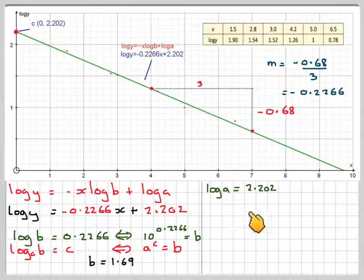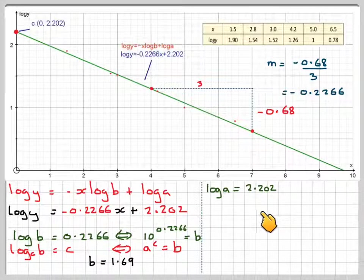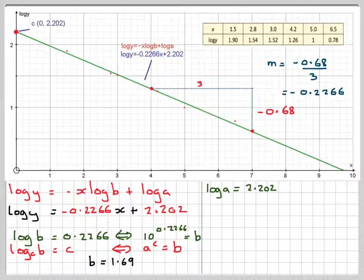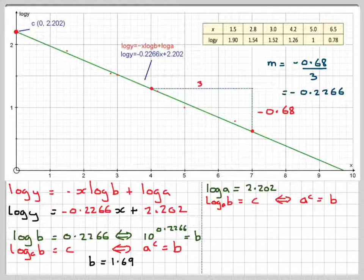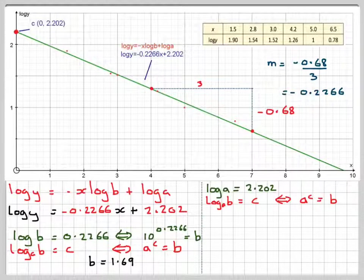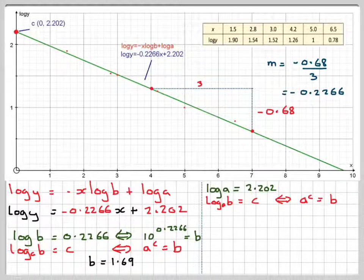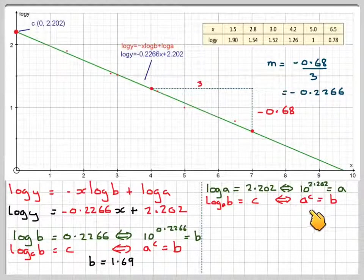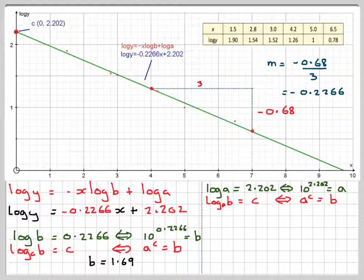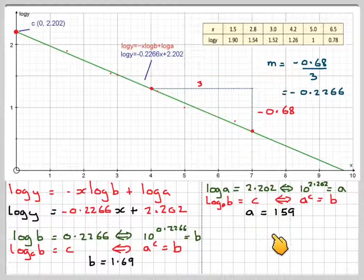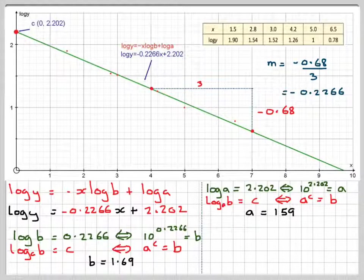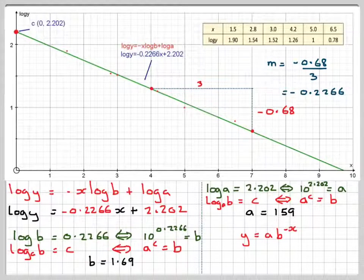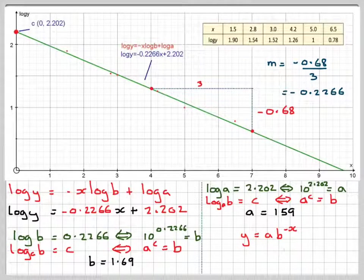And log a will be equal to 2.202. Using the same rule, log to the base a of b equals c is a to the c equals b. The a's are different here. The a in here is 10, so it will be 10 to the 2.202 is equal to our a. So a will be equal to 159 to three significant figures. So going back to our thing y equals ab to the minus x, y equals 159 times 1.69 to the minus x if we do it this way.